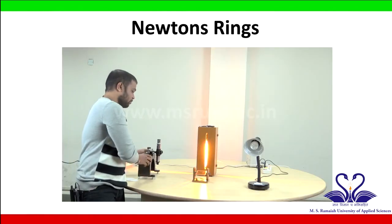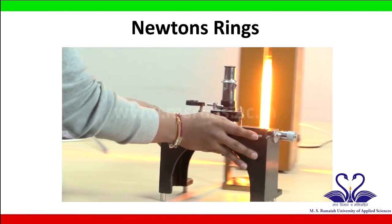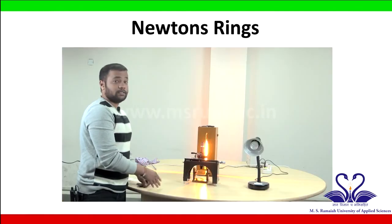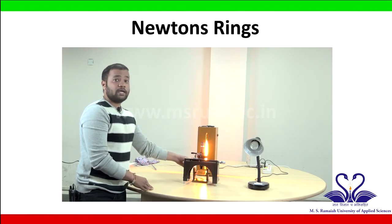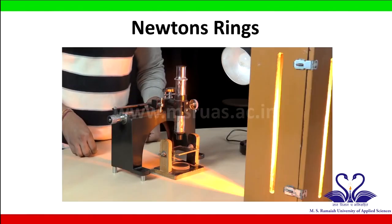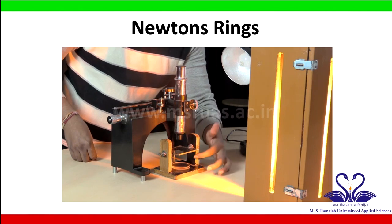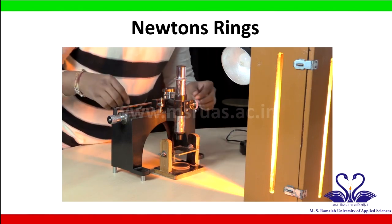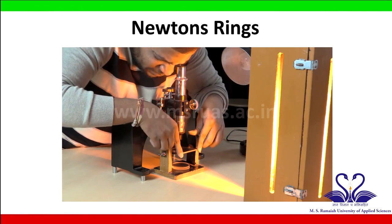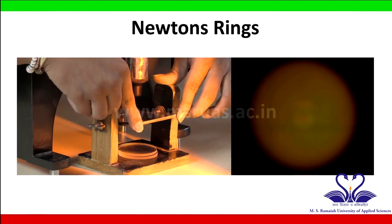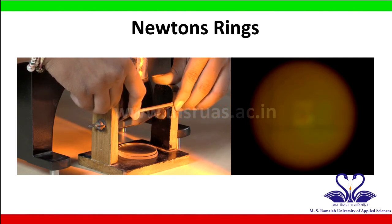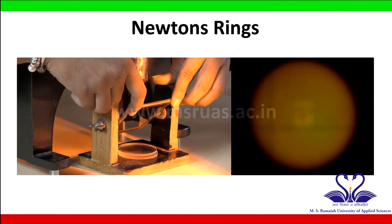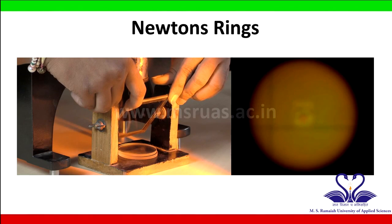Let us take the travelling microscope and position it exactly above the Newton's ring apparatus. See through the eyepiece and tilt the reflector towards you until the field of view is completely bright. If the field of view is completely bright, that indicates the reflector is exactly at 45 degrees.